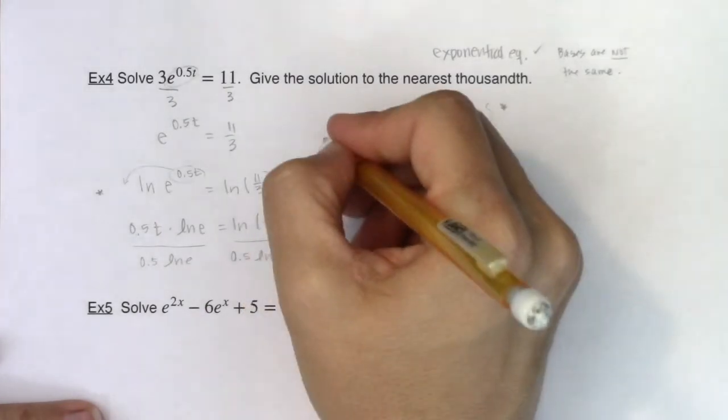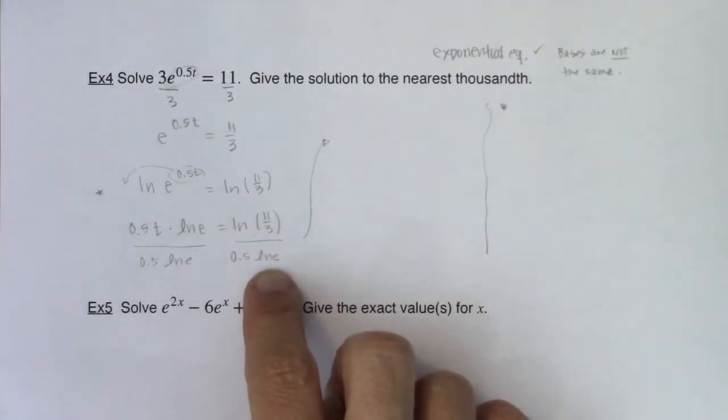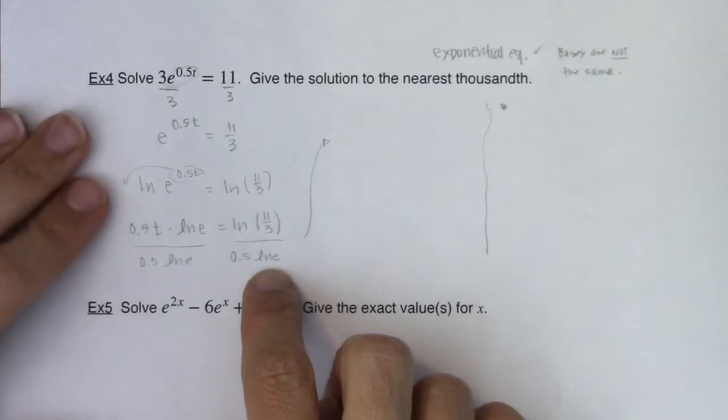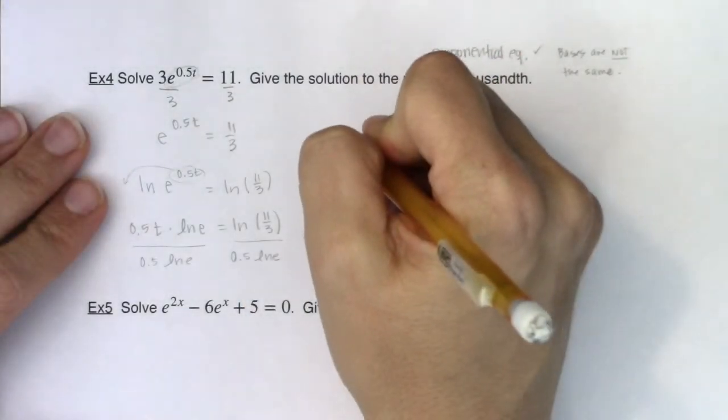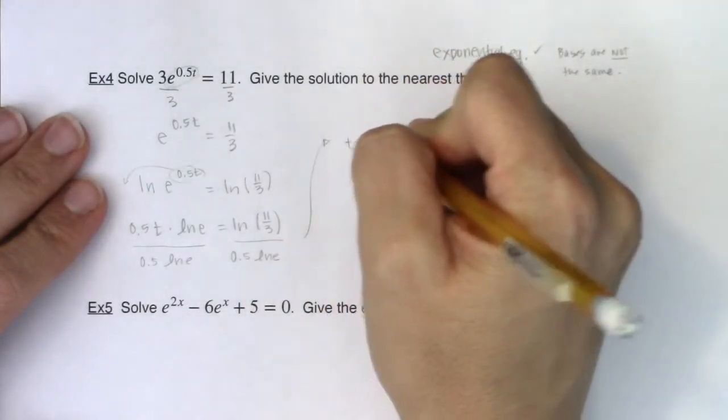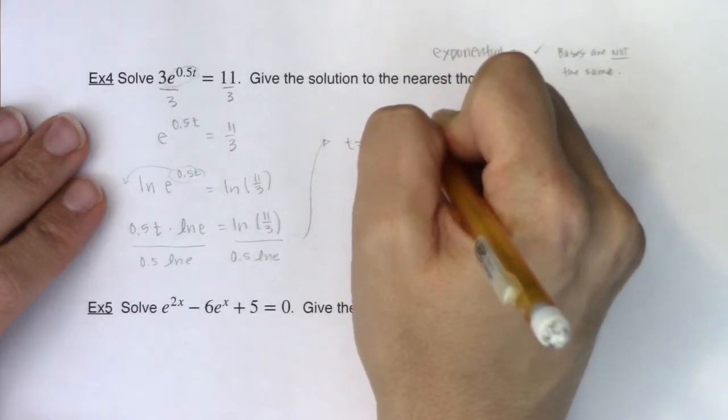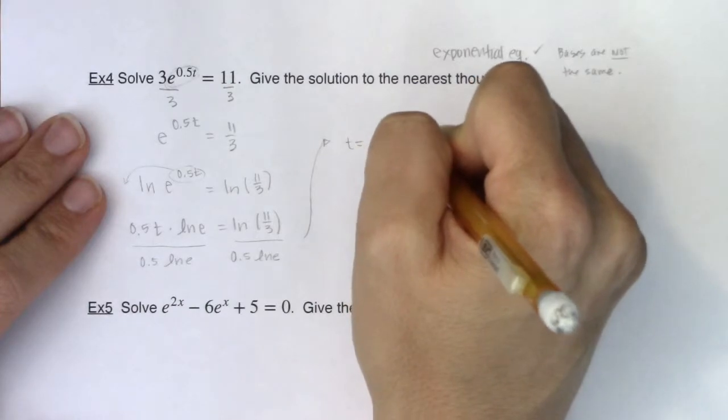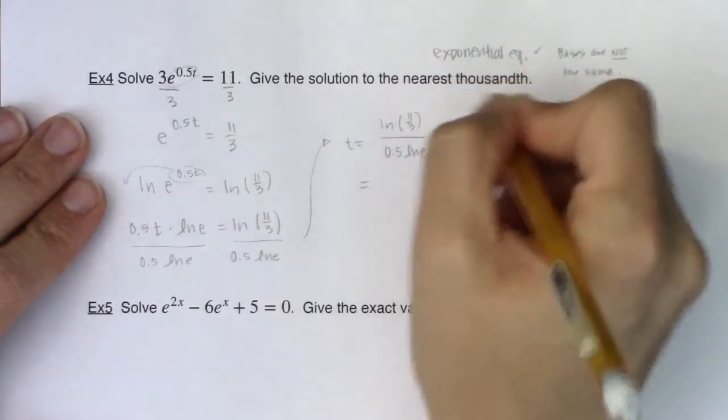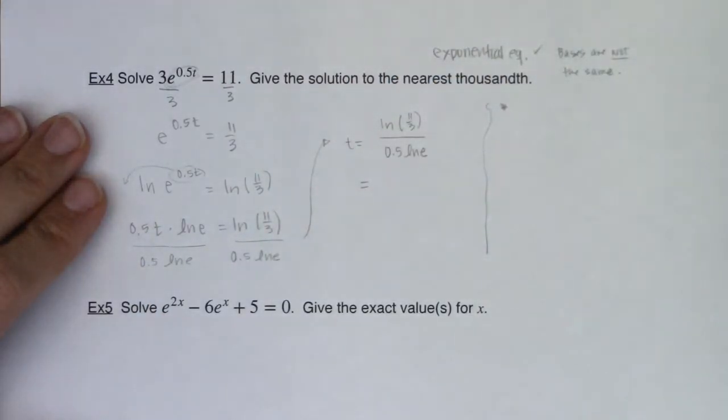And again, if you're seeing the shortcut with ln e, great. And if you're not, that's fine too. Let's just keep working this. I will show you all these shortcuts that we can get to. So I will have ln of 11 thirds over 0.5 ln e. And let's crunch that number to the nearest thousandth.